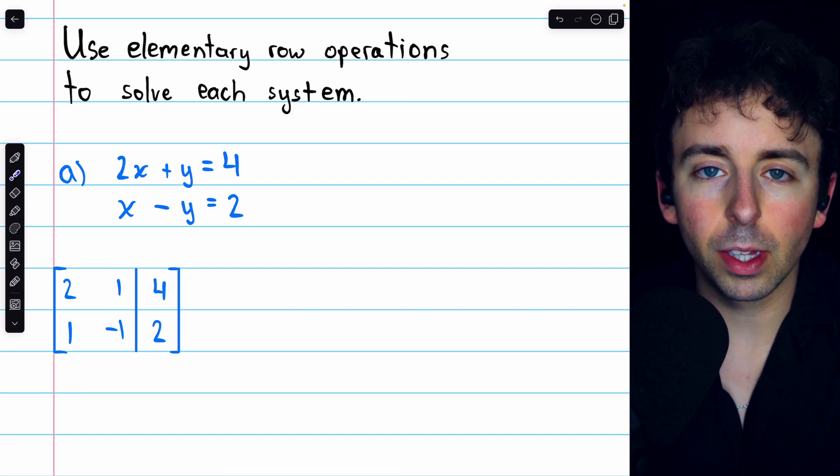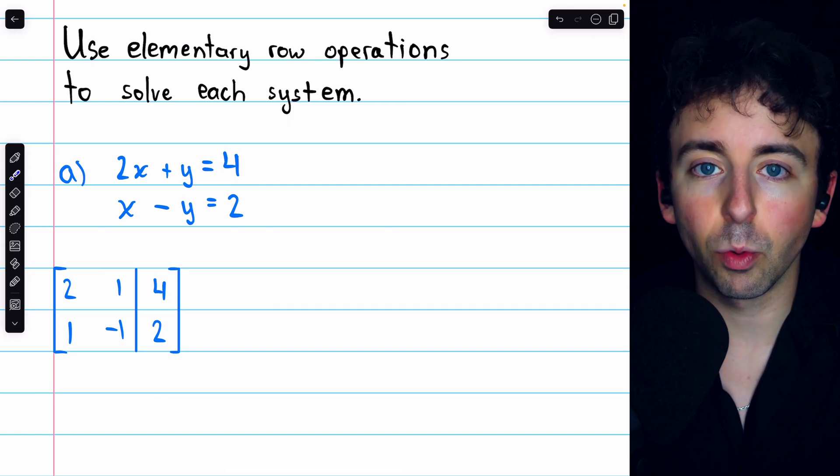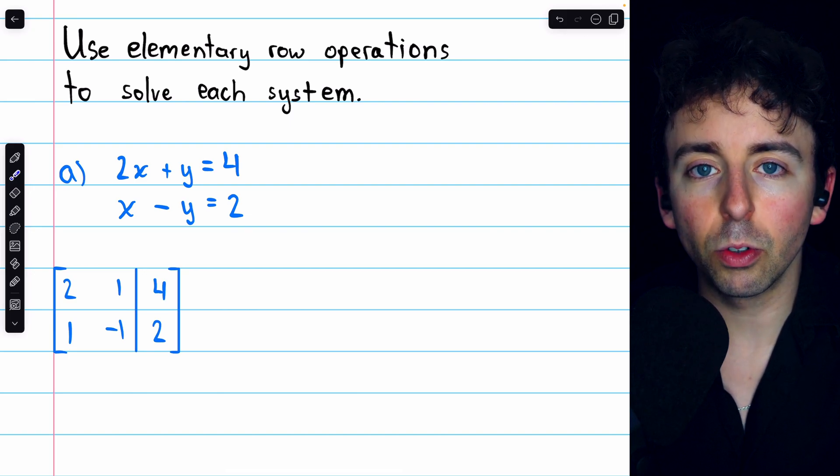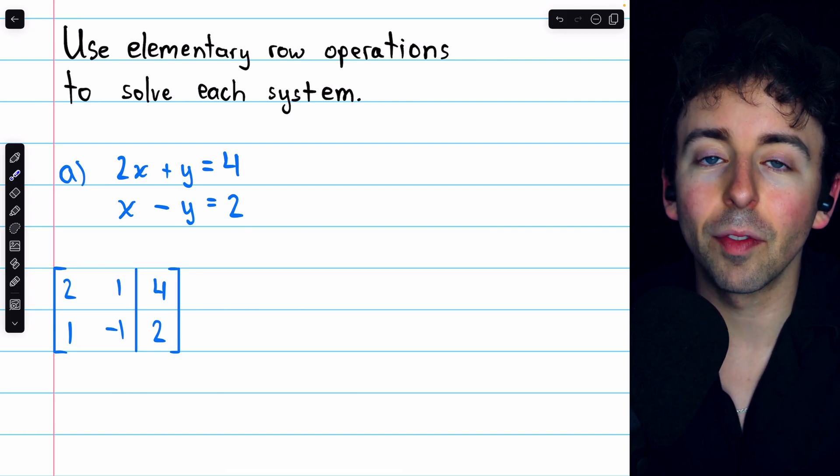In these examples, we'll see the full set of possibilities, so one example will have one solution, one example will have infinitely many solutions, and another example will have no solutions.